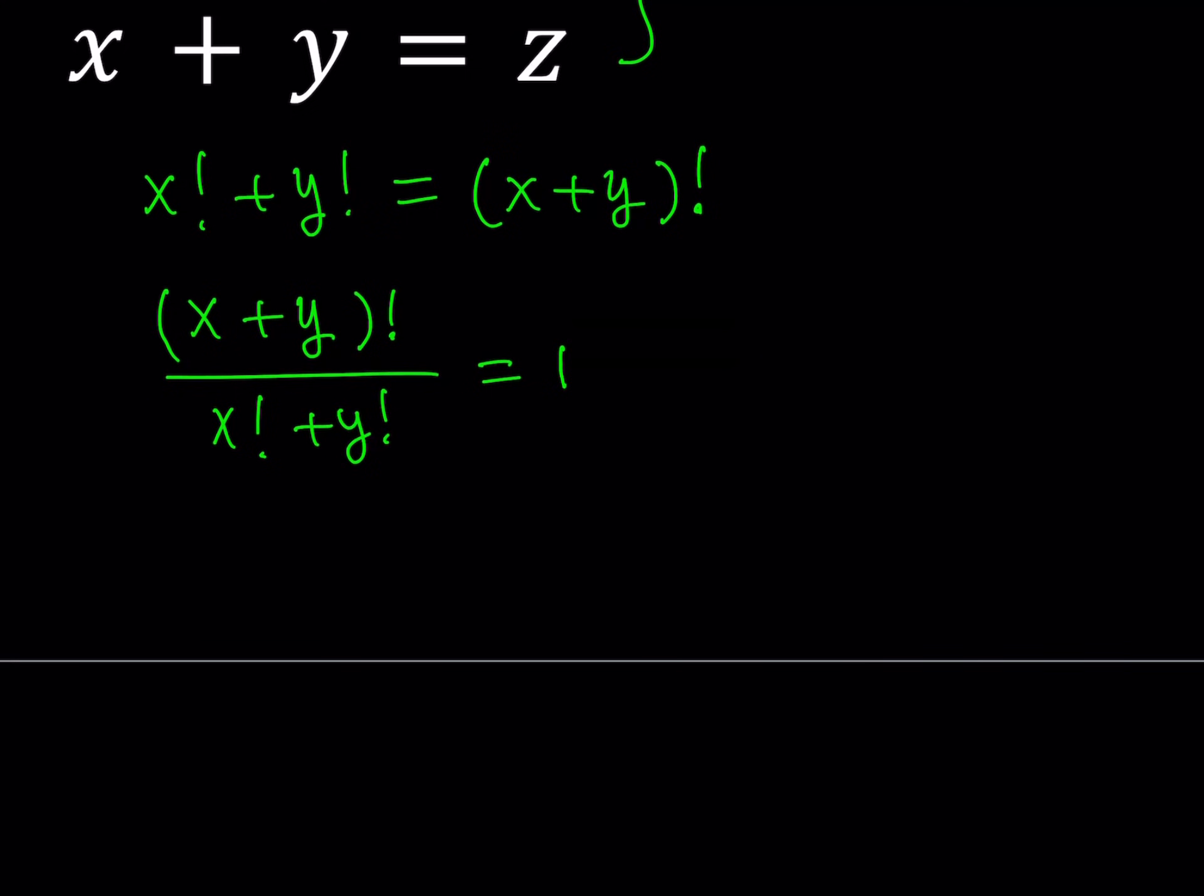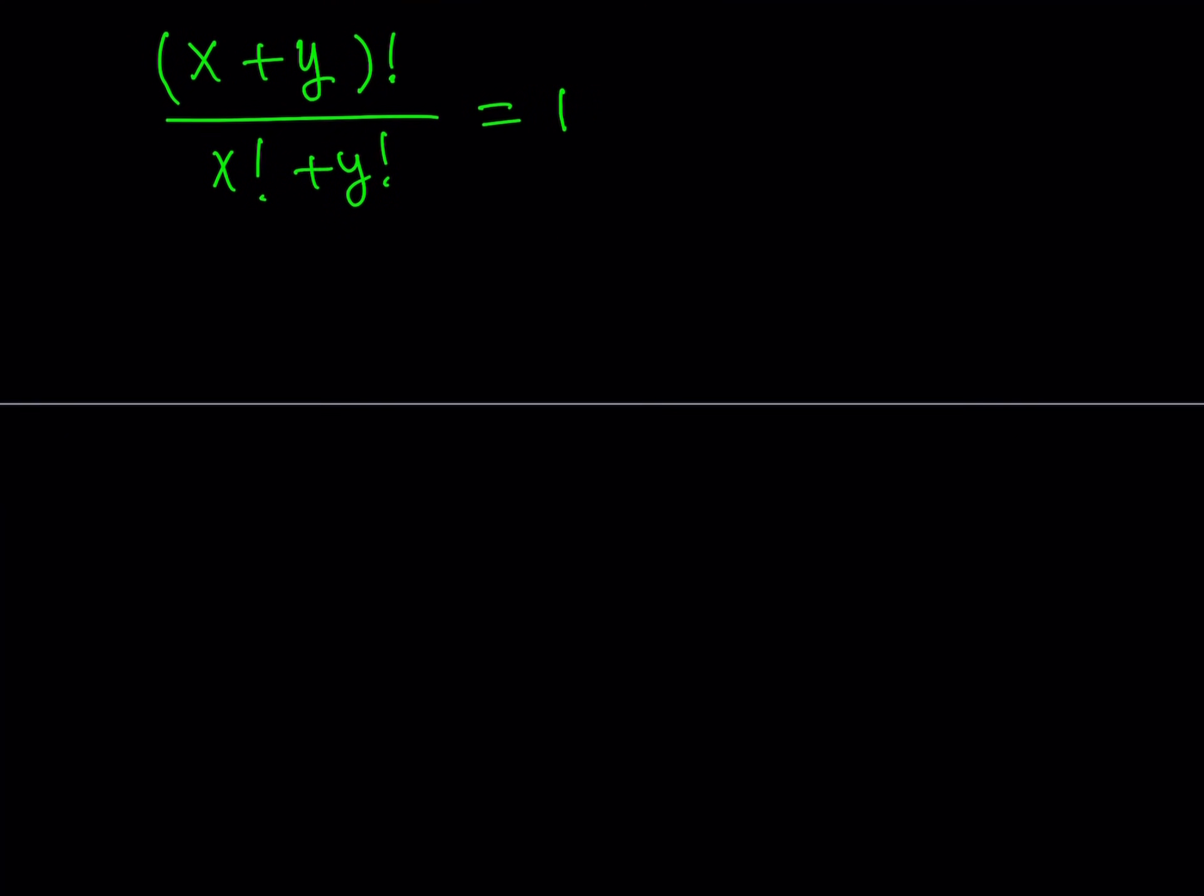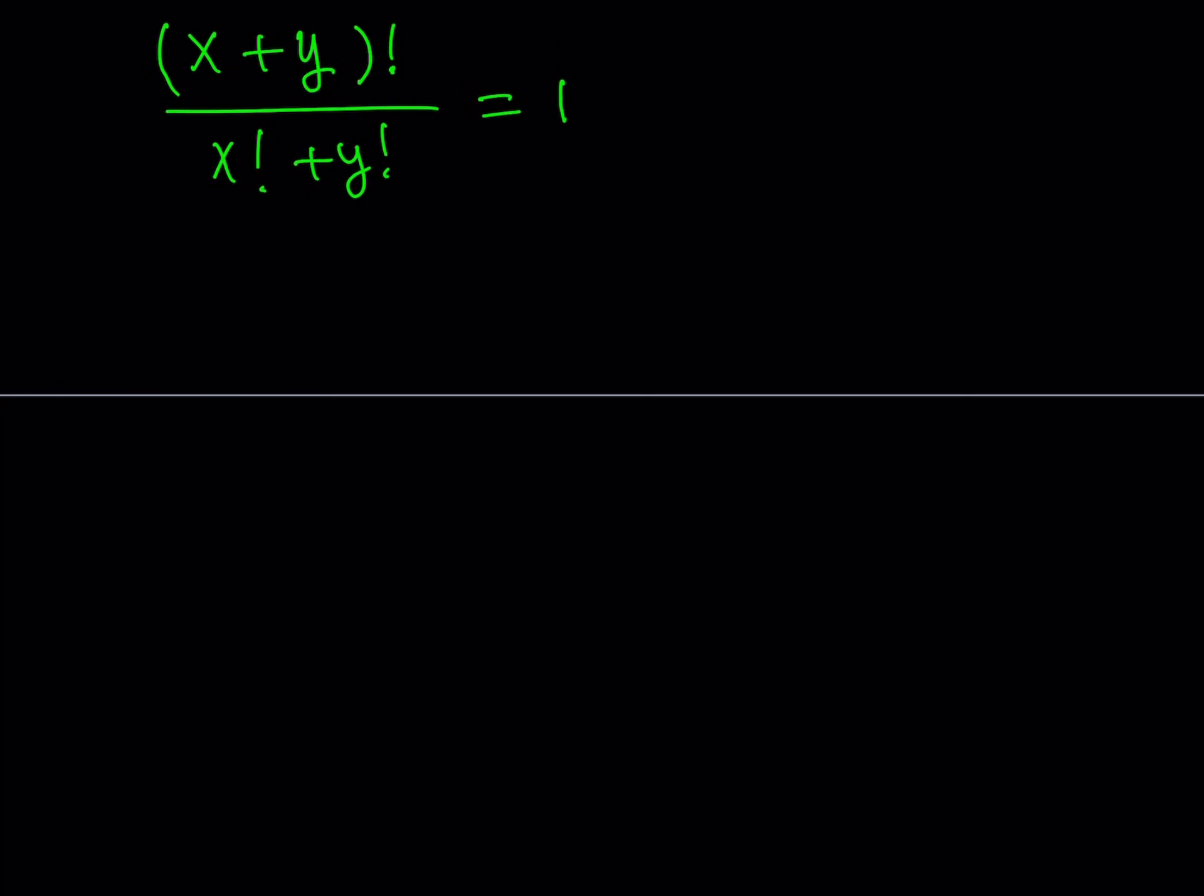Well, it doesn't really give us much except here we do see that this equals one. But look at the numerator and the denominator. Wouldn't that be nice if instead of this, if we had the product at the bottom? Instead of this, wouldn't that be nice if we had x plus y quantity factorial divided by x factorial times y factorial? Why would that be nice? Well, because this means something.